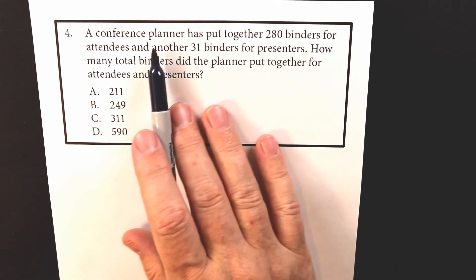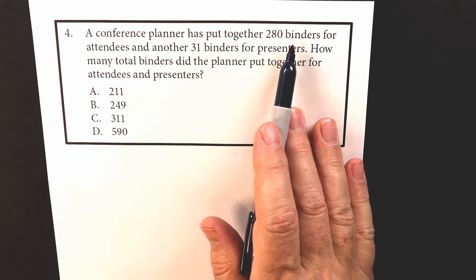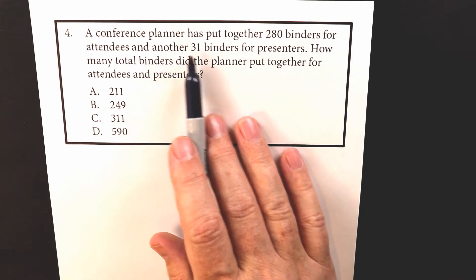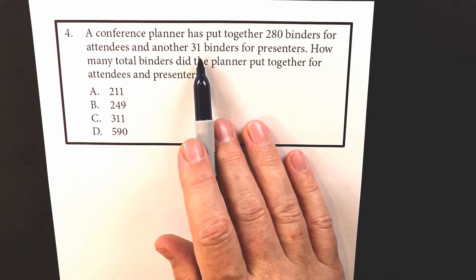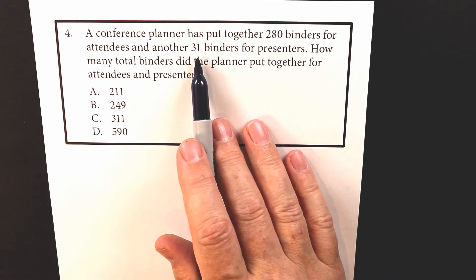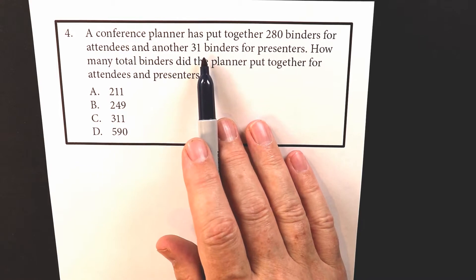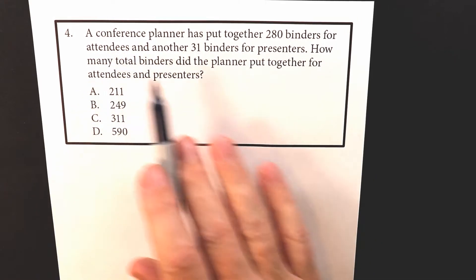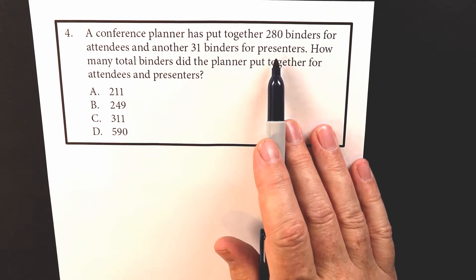So the planner is making 280 binders for people that are going to the conference, and then the planner is also making 31 binders for people that are talking, people that are presenting. So there's two different groups of people, the people that are going, the attendees, and then the people that are talking, which are the presenters.